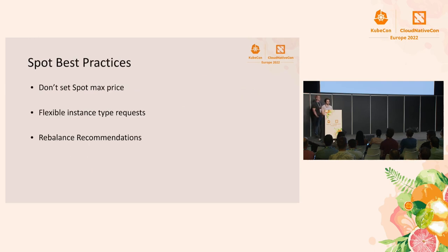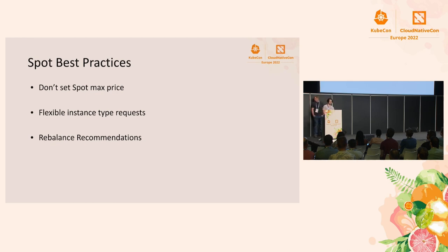Some Spot best practices we'll talk about are Spot max price and how not to set it, flexible instance type requests, and rebalance recommendations. These are all going to maximize your instance runtime, minimize your cost, and maximize the chances that you can get an instance when you ask EC2 for one.